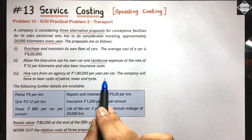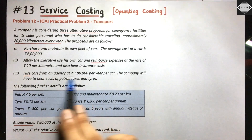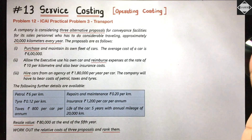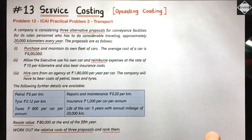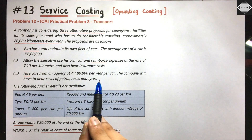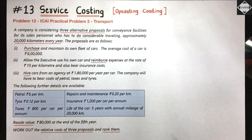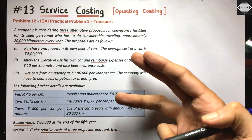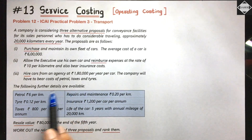The third option is to hire cars from an agency at 1,80,000 per year per car. Under this option, the company is not purchasing the car and is not reimbursing an employee's personal car. Instead, the company takes a car on rent, and the company will have to bear the cost of petrol, taxes, and tire replacement as well.